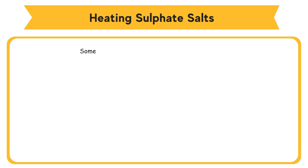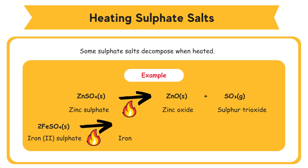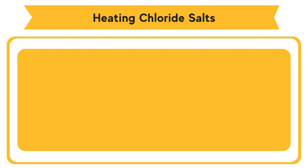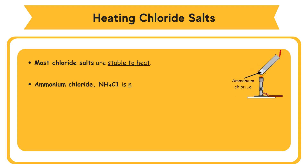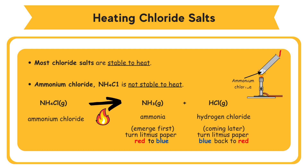Heating sulfate salts: Some sulfate salts decompose when heated. Example: Zinc sulfate → zinc oxide + sulfur trioxide. Iron(II) sulfate → iron(II) oxide + sulfur dioxide + sulfur trioxide. Heating chloride salts: Most chloride salts are stable to heat. Ammonium chloride, NH4Cl, is not stable to heat. On heating, ammonium chloride decomposes to produce ammonia and hydrogen chloride. The lighter ammonia gas will emerge first and turn a piece of moist red litmus paper blue. Hydrogen chloride, coming later, will change the litmus paper from blue back to red.